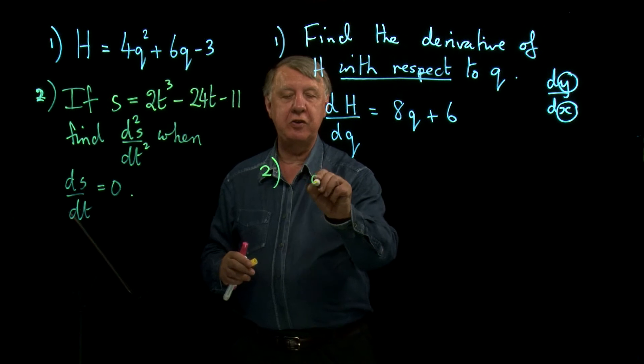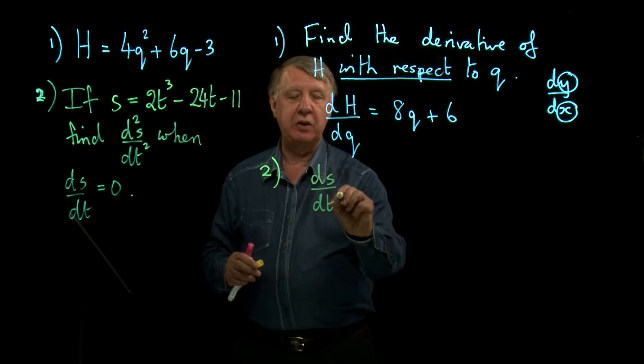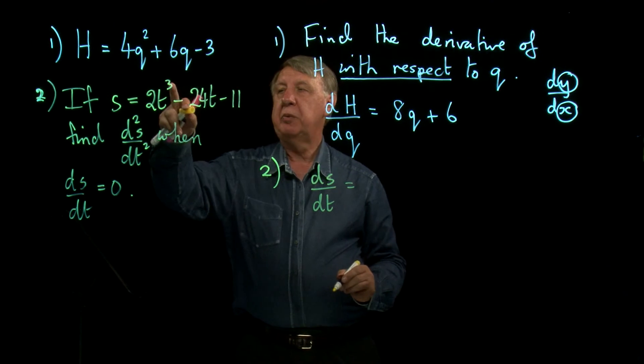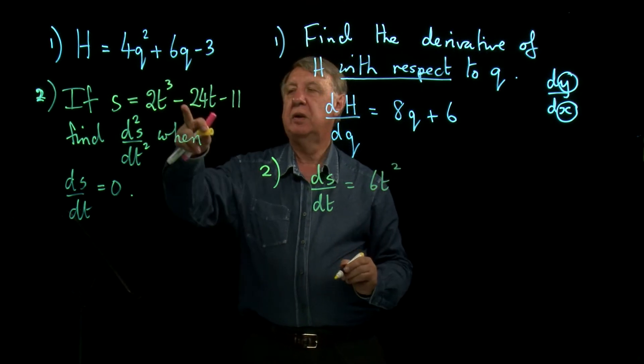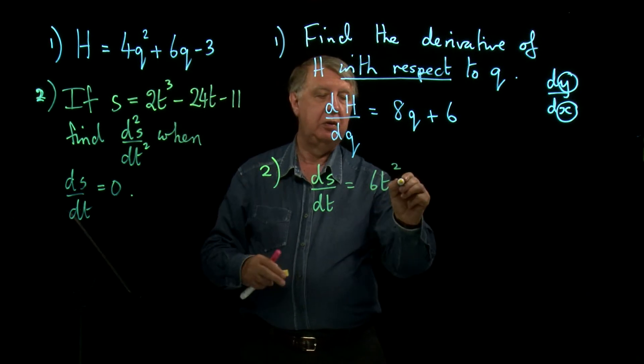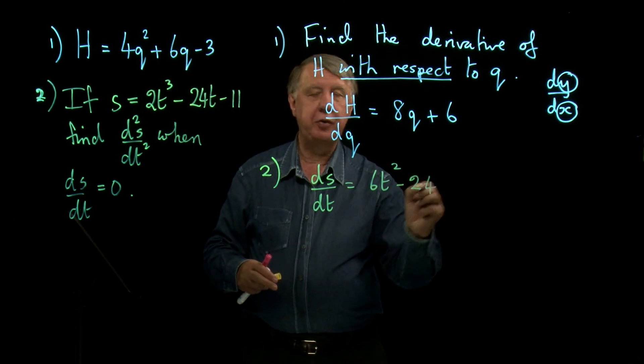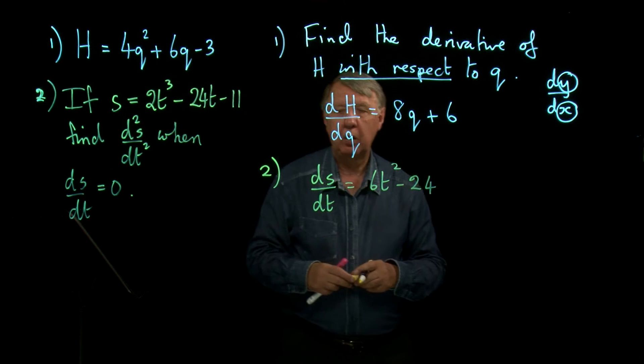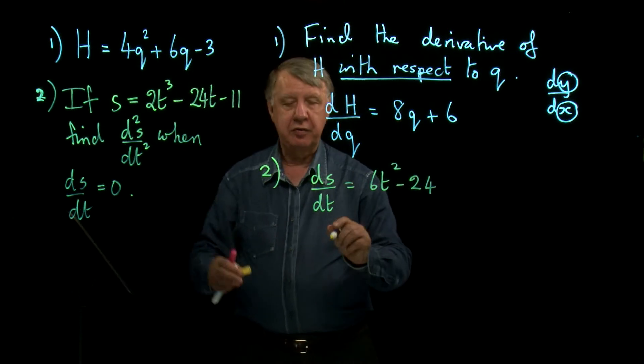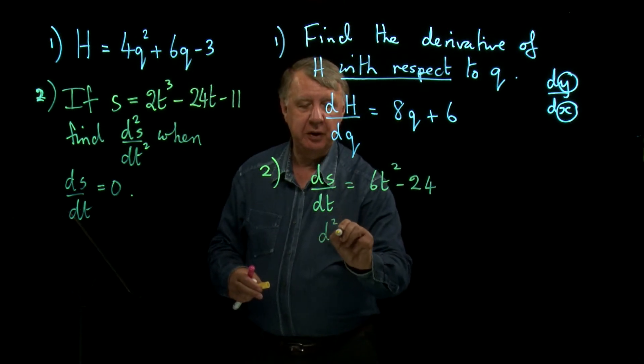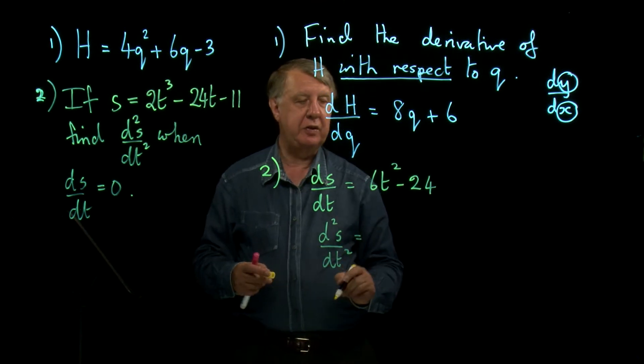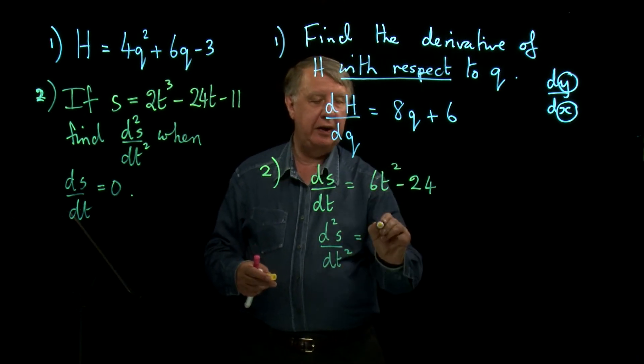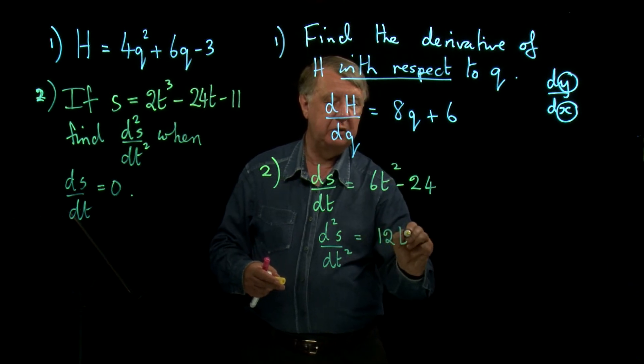If I differentiate that once, I get ds/dt: bring down the 3, that's 6t² - 24. Differentiate again—that's what d²s/dt² means. So to differentiate this again, I get 12t.